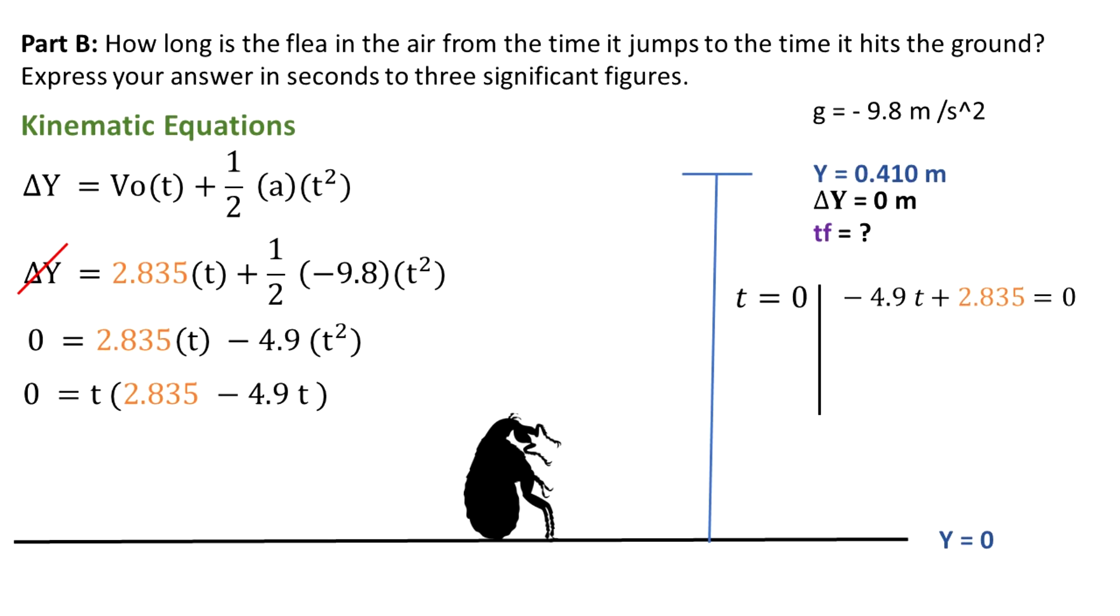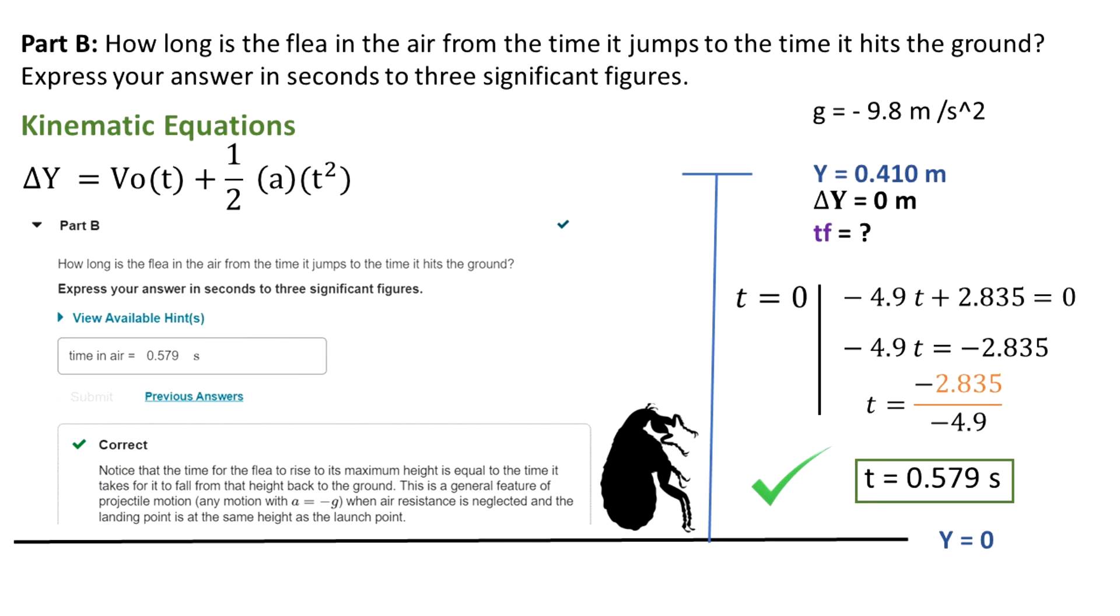So we know that one of the values is t equal to zero, which is true because the flea was on the ground at the beginning of the experiment. And the second moment in time when the flea comes back to the ground, that's the time of flight that we need. It's what we're going to find solving this equation. Now we subtract 2.835 and divide by minus 4.9. Minus divided by minus is plus, and we get that the time of flight is 0.579 seconds.